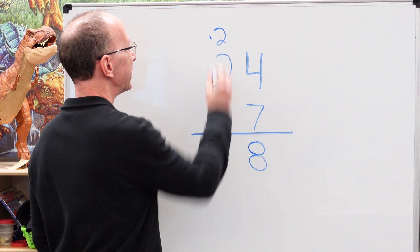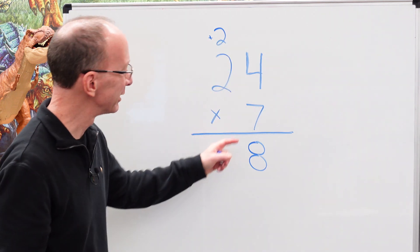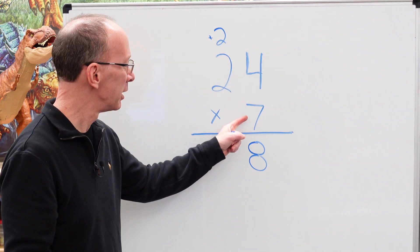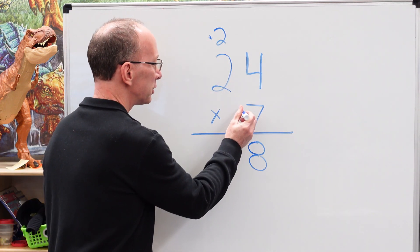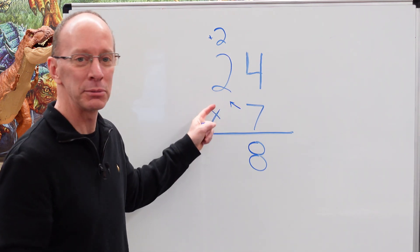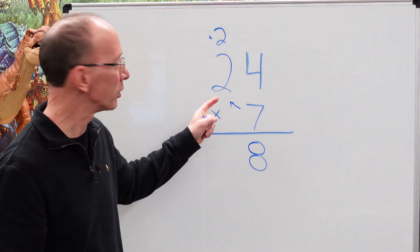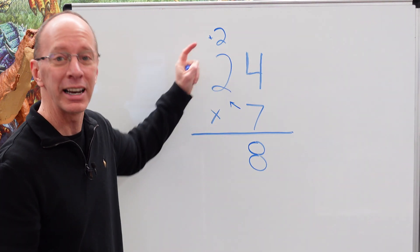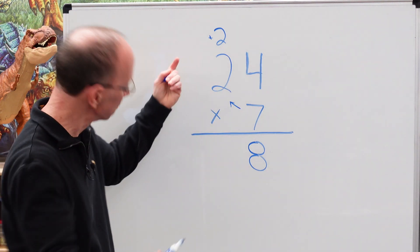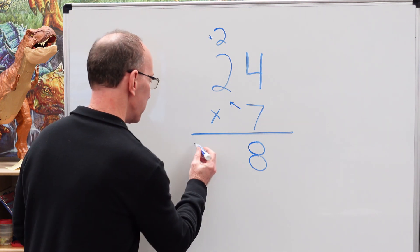We're going to be adding this 2 right here. So let's go ahead and do the next number, going in this direction. 7 times 2 is 14, then add the 2: 15, 16. That's how it is.